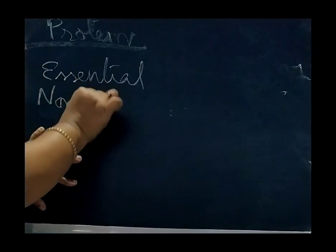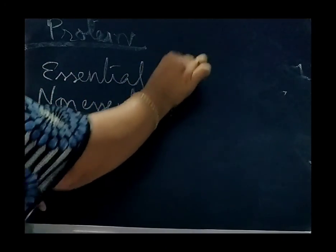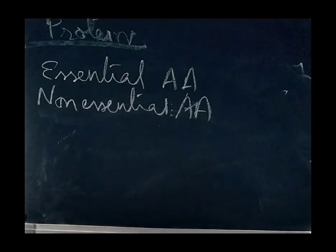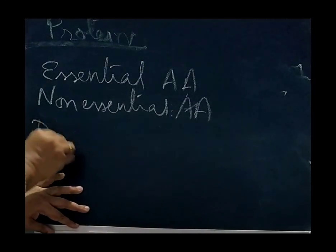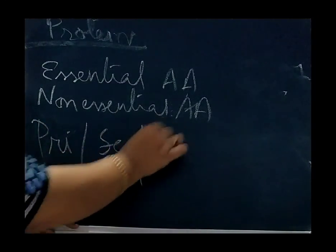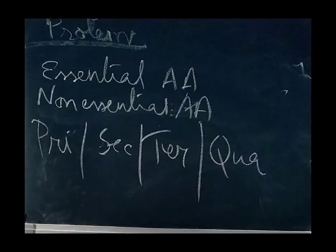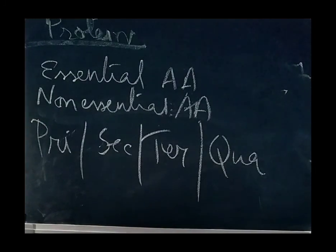There are certain amino acids which are essential amino acids as well as non-essential amino acids. Essential amino acids are what which are essential for our health and need to be supplied through our diet. Non-essential amino acids are what the body can synthesize. Now structure of proteins may be of primary structure, secondary structure, tertiary structure and quaternary structure.